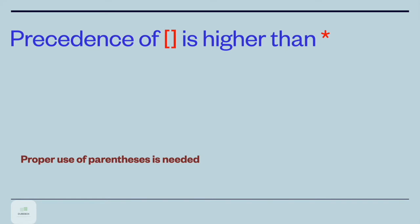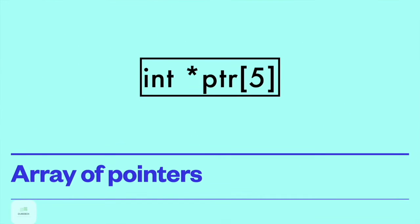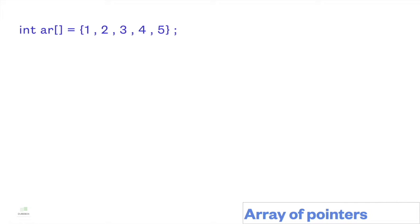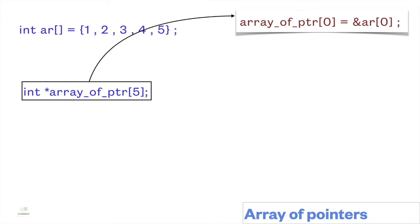Confusion arises due to the precedence issue, so the use of parentheses is always advised. Now let's look first into the concept of array of pointers. Here I am taking an array of 5 elements which contains the values 1, 2, 3, 4, and 5. Let's declare an array of 5 pointers: `int *array_of_ptr[5]`. Now we can assign the address of the 0th element of the array to the 0th element of the array of pointers.